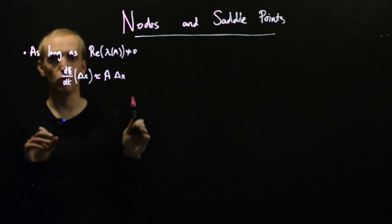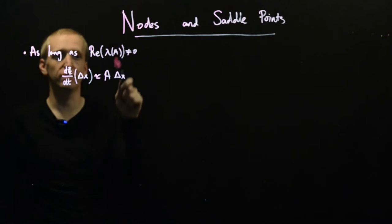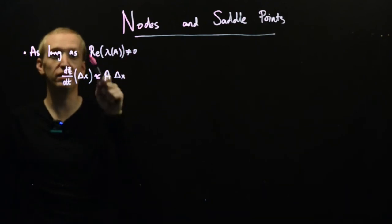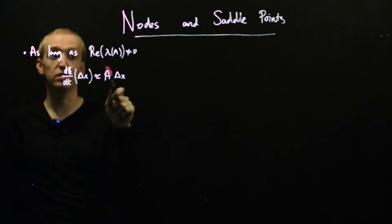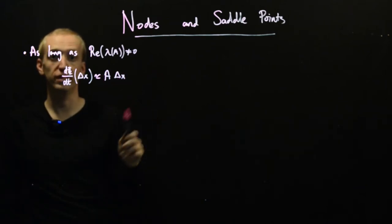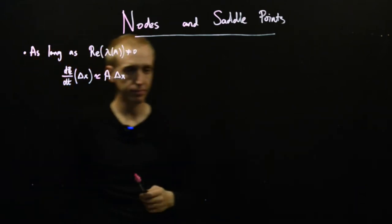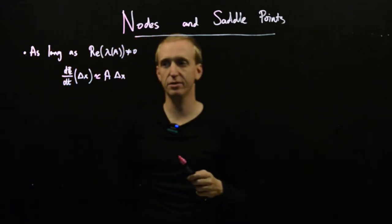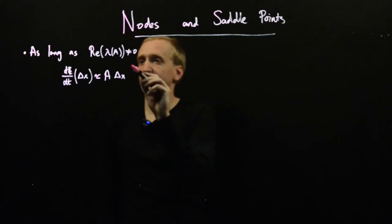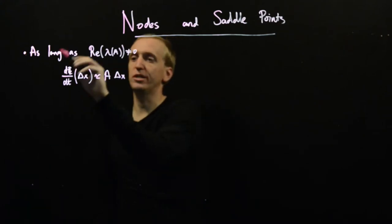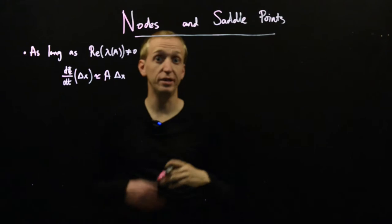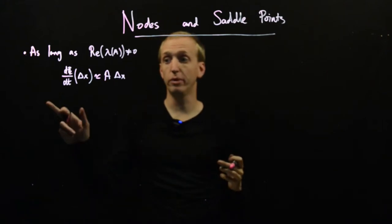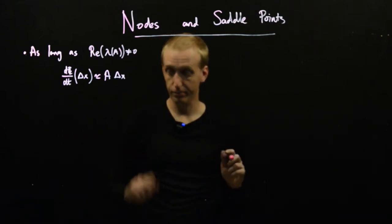This idea of dominating — if you want to get ahead and start thinking about why, if this condition was violated, this term might not dominate — we'll get back to that soon. So, subject to this condition, we could approximate our solution near the equilibrium point by a linear system.